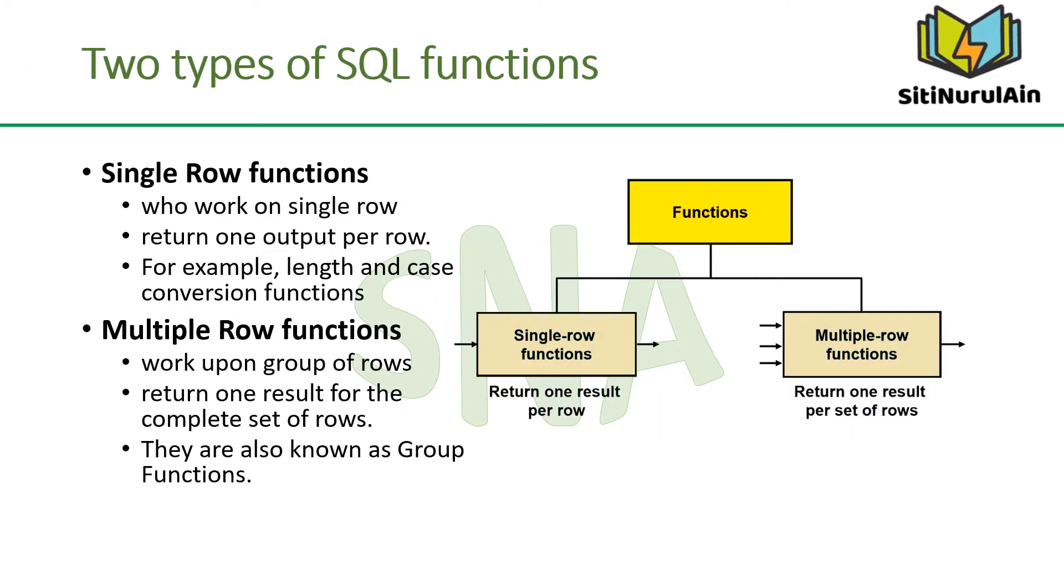There are two types of functions. Single row functions work on a single row and return one output per row. For example, length and case conversion functions are single row functions. Multiple row functions work upon groups of rows and return one result for the complete set of rows. They are also known as group functions.